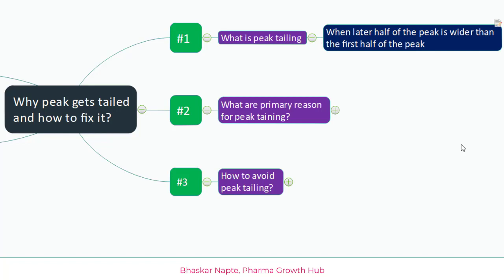When the latter half of the peak is wider than the first half of the peak, you can say that you have peak tailing. In case you divide the peak into two halves from its apex, if the width of the left half and the right half are equal, then you have an accurate Gaussian peak. But if one half is wider than the other half, you have peak tailing.